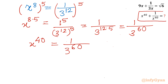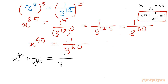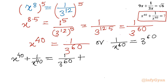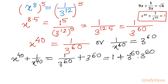Let's calculate our required expression. x power 40 plus 1 over x power 40. This value will equal 1 over 3 raised to the power 60, plus — since 1 over x power 40 is the reciprocal of x power 40 — it becomes 3 power 60. Taking LCM: that is 1 plus 3 power 60, times 3 power 60, divided by 3 power 60.